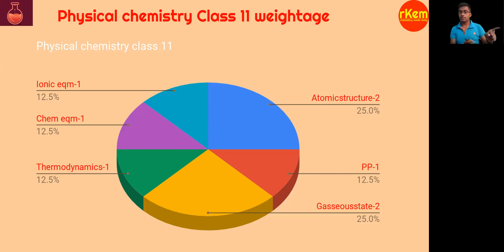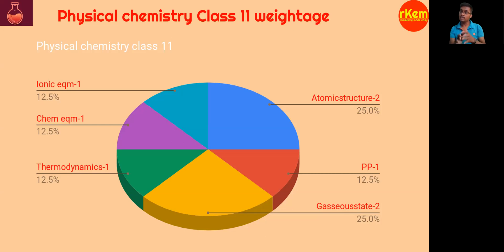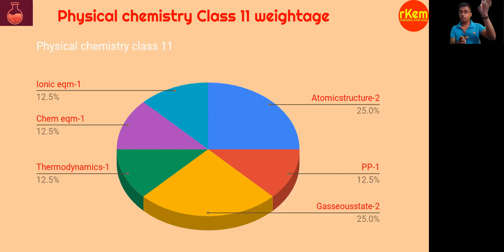Next, ionic equilibrium. Solubility is a compulsory question — solubility product and pH of salts. One more question was asked on conjugate acid and conjugate base: what is the relation? If H₂O is given, what is its conjugate acid? A matrix match question was given where you have to match four conjugate acids with four conjugate bases across two columns. This type of question was asked in 2019.